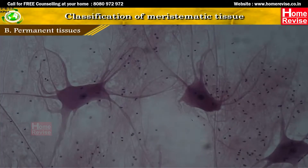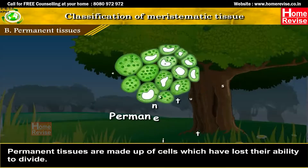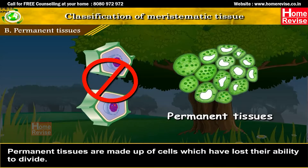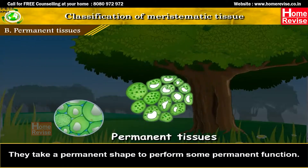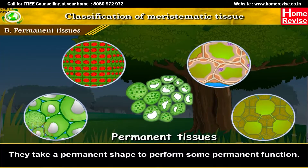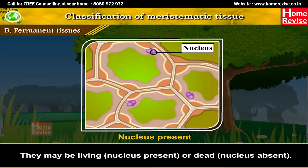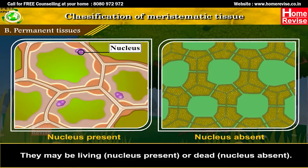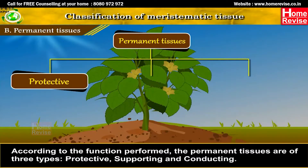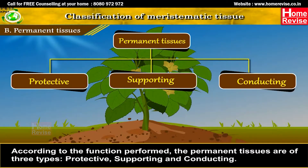Permanent tissues are made up of cells which have lost their ability to divide. They take a permanent shape to perform some permanent function. They may be living, with a nucleus present, or dead, with the nucleus absent. According to the function performed, permanent tissues are of three types: protective, supporting and conducting.